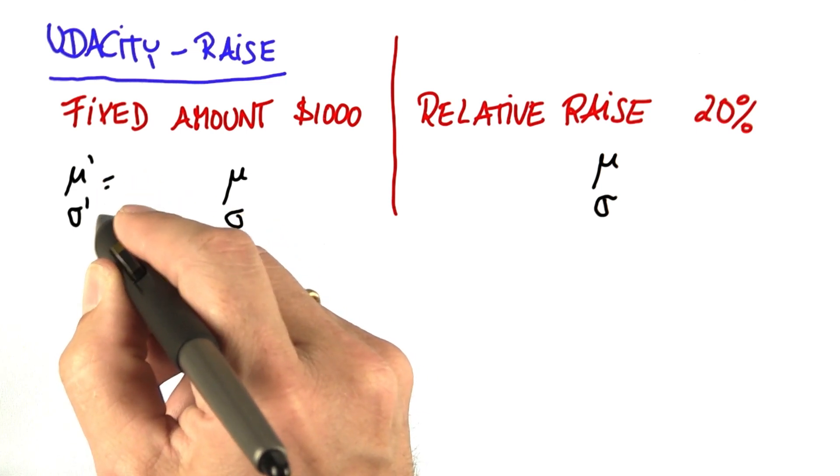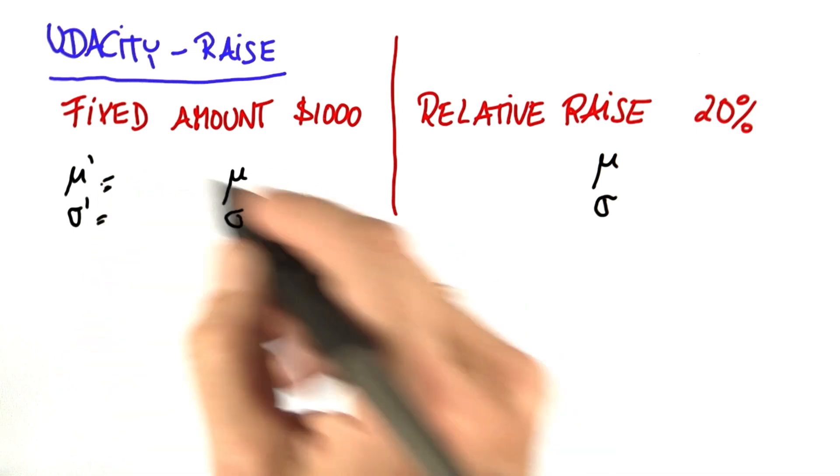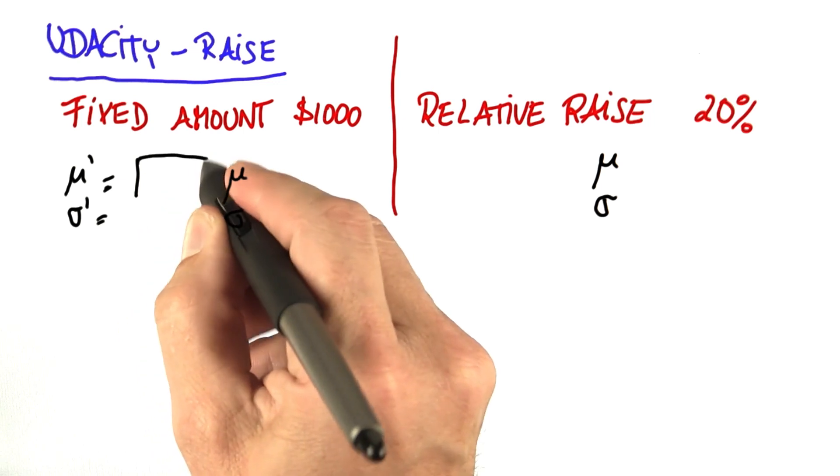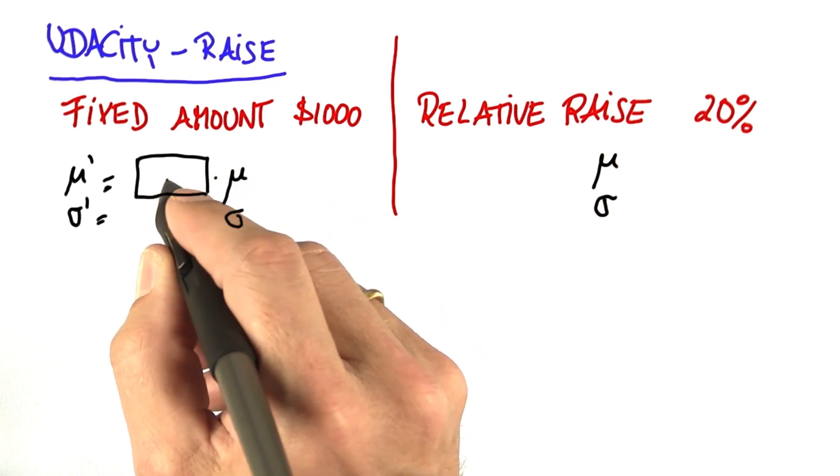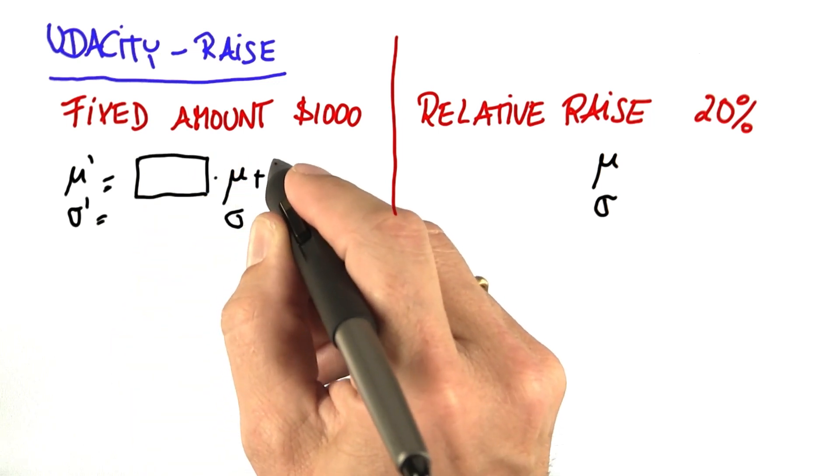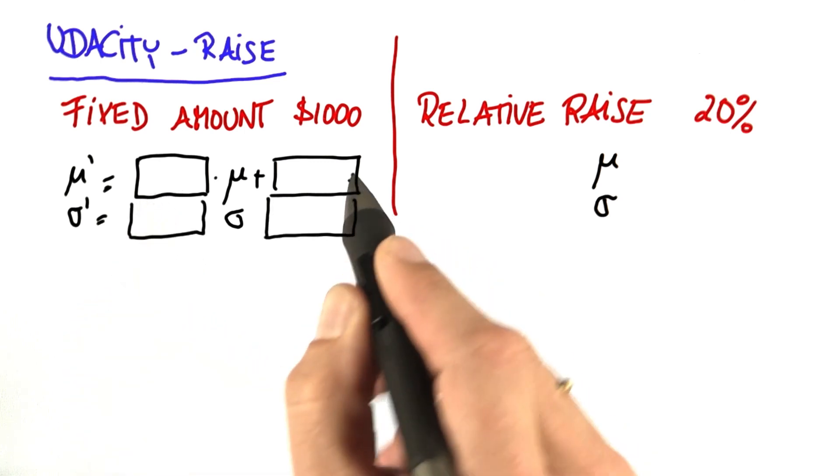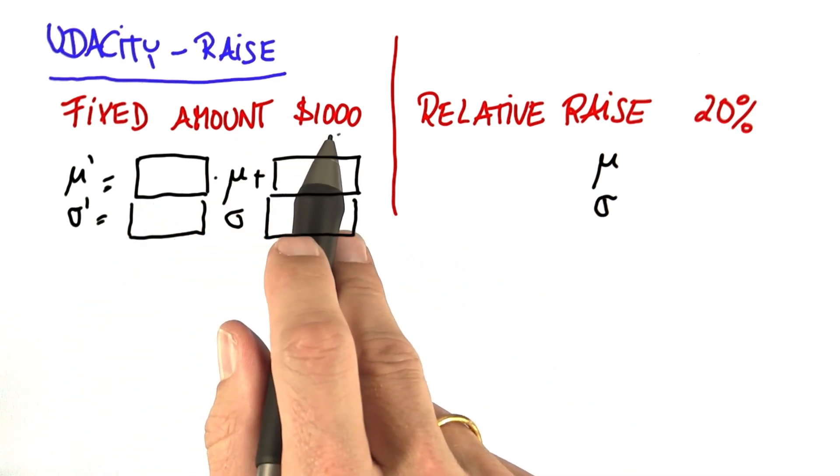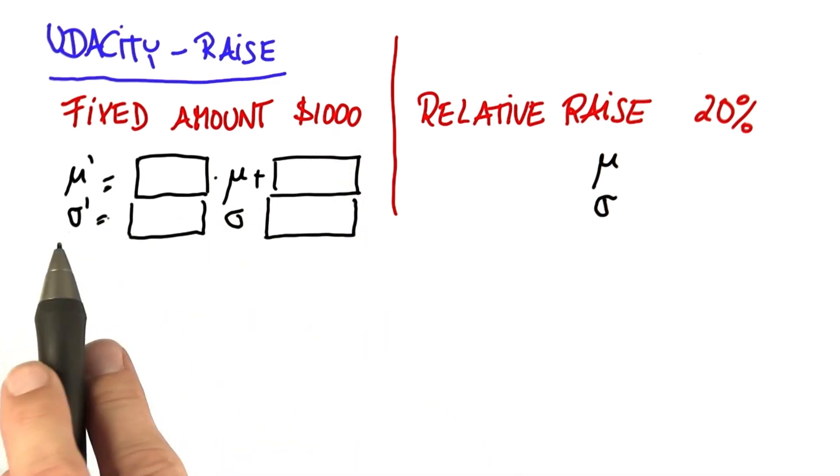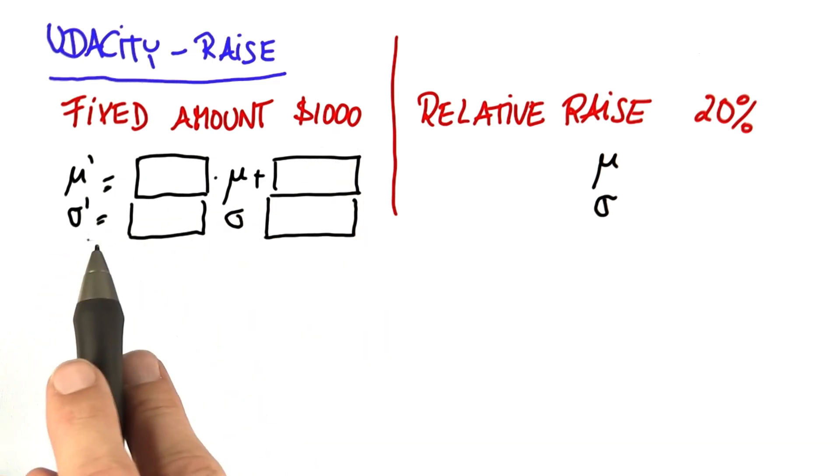that I call mu prime and sigma prime. And the change is either multiplicative, which would be the factor over here, or additive. If there's no multiplicative change, just put a 1 over here. Can you guess what the effect is of adding $1,000 to each salary on the mean and the standard deviation?